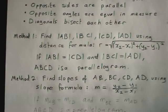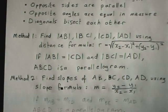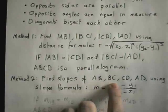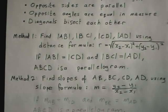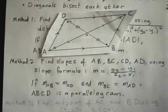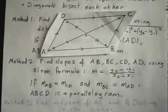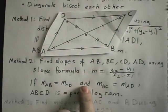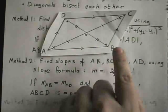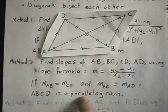For method 2, I'm going to use the second property: opposite sides are parallel. To prove that two sides are parallel, we need to find their slopes. So we find the slopes of these four sides of the parallelogram using the slope formula, also on page 18 of your formula and tables book — ignoring the diagonals again. If the slope of one side equals the slope of its opposite side, and the same is true for the other pair of opposite sides, then you have a parallelogram.